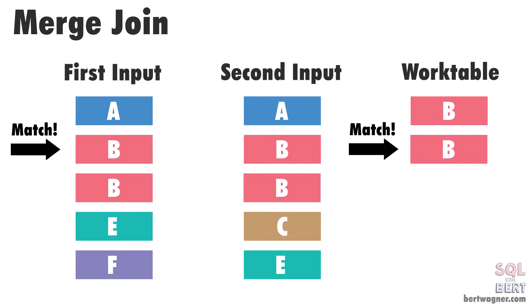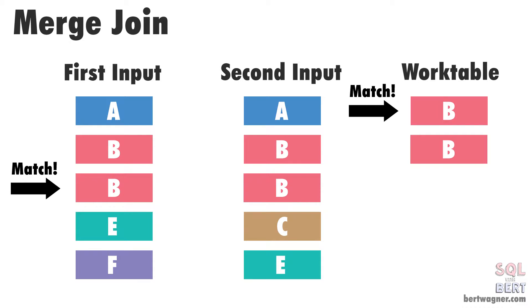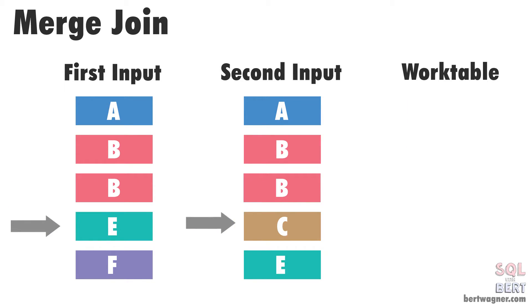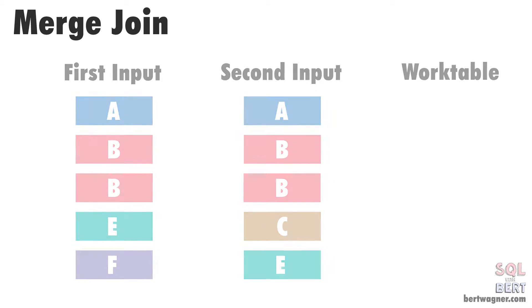If those duplicated values are also duplicated in the first table, SQL Server then goes ahead and compares the first table values to those already stored in the work table. Once the iterator moves past those duplicated values, the work table gets cleared out and the merge join continues on its merry way as described.